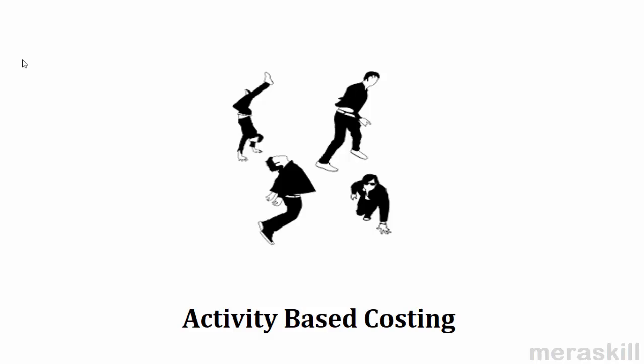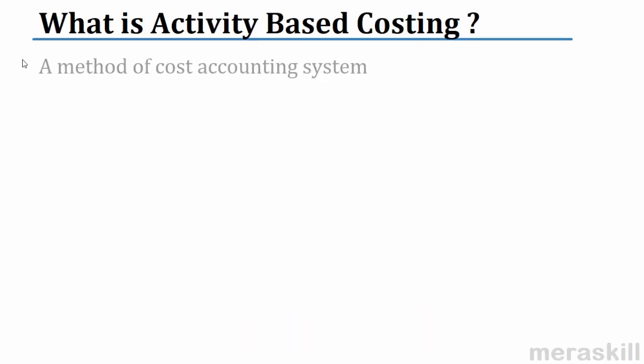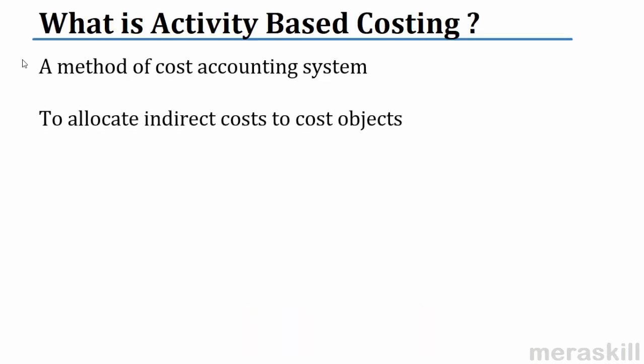Now students, let us look at activity-based costing. Activity-based costing is a more recent concept of absorption and allocation of overheads. It is a method of cost accounting system to allocate indirect costs to cost objects.